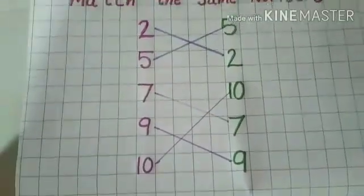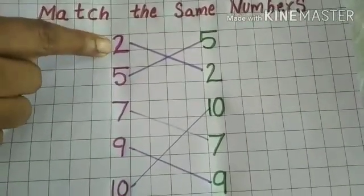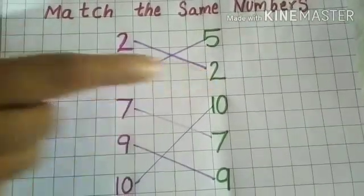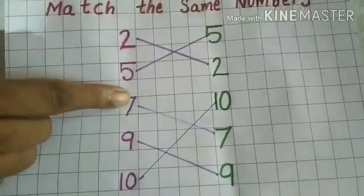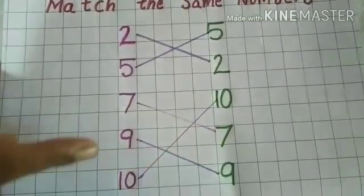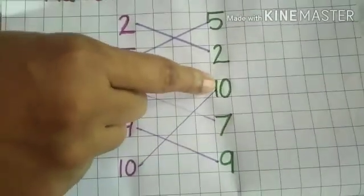Okay children. Match the same numbers. 2 by 2. Then 5 by 5. 7, 7. 9, 9. And then last is 10 by 10.